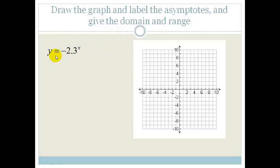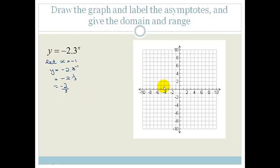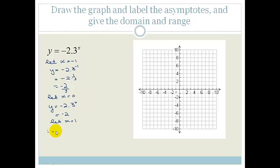Now we have y equals minus 2 times 3 to the x. So 3 to the x is what we had before, but now we're multiplying by minus 2. If x equals minus 1: y equals minus 2 times 3 to the negative 1, which is minus 2 times a third, giving minus 2 over 3. If x equals 0: y equals minus 2 times 3 to the 0, which is minus 2. If x equals 1: y equals minus 2 times 3, which is minus 6.